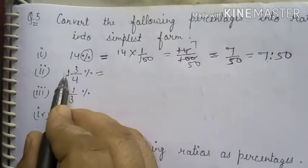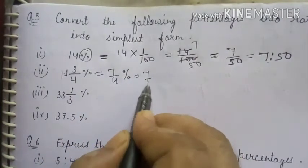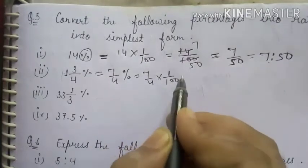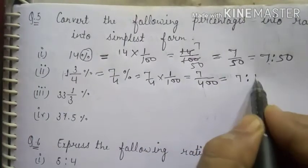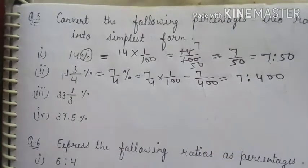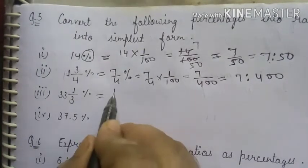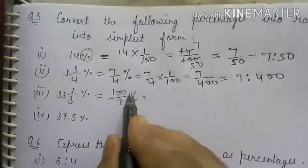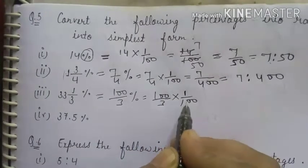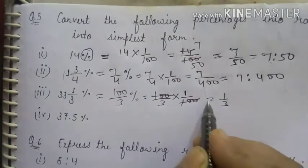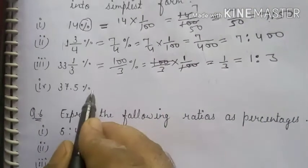Second part: convert the mixed fraction to improper fraction — 4×1+3 = 7 upon 4 percent. Removing percent, multiply 7 upon 4 by 1 upon 100, giving 7 upon 400. As a ratio: 7 is to 400. Third part: 33⅓% written as 100 upon 3 percent. Multiply by 1 upon 100 — the 100s cancel — giving 1 upon 3, or as a ratio: 1 is to 3.